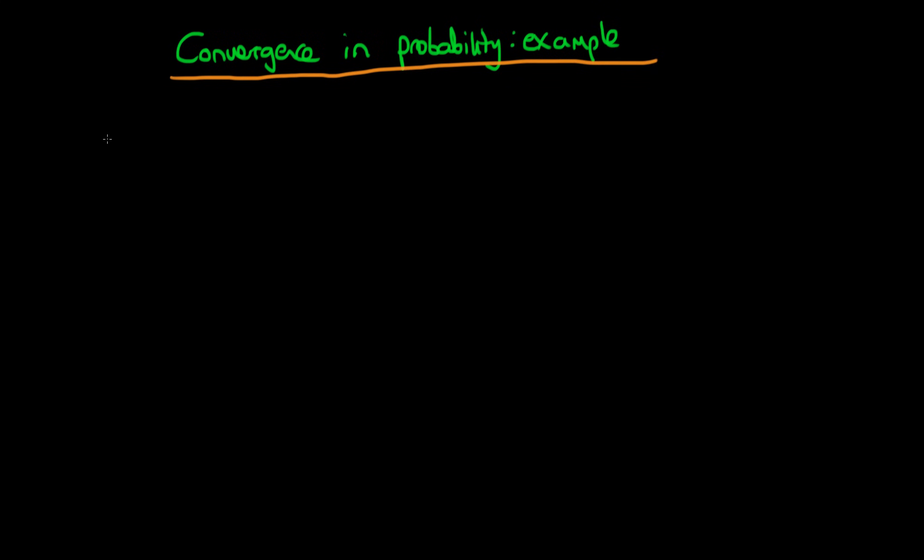In this video I wanted to provide an example of how it is possible for a random variable Xn to tend in probability to a random variable X. And for this particular case I'm going to use a random variable X which is a discrete random variable which takes on one of two values.